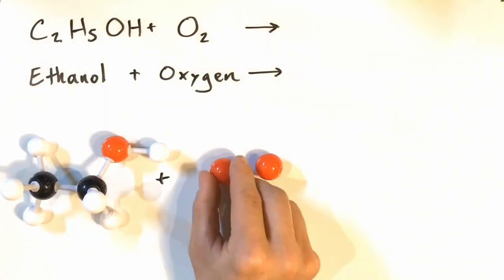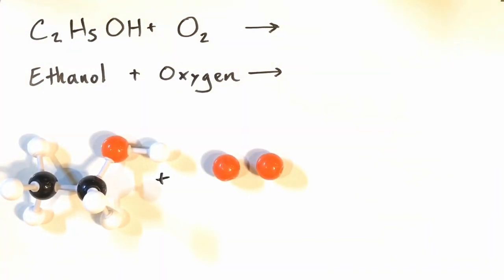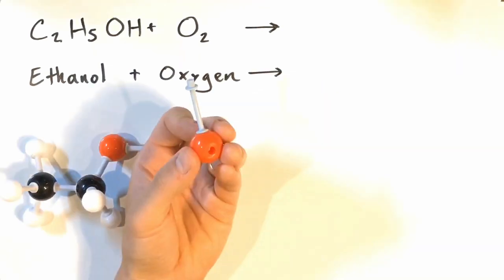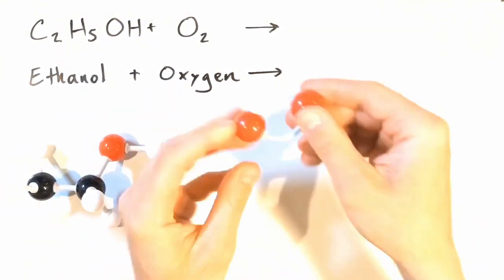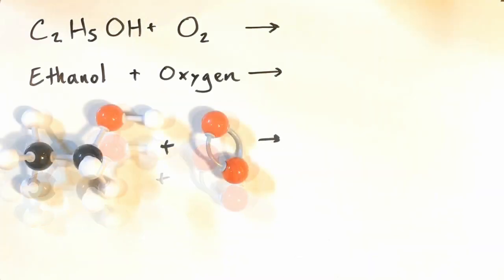A molecule of oxygen gas should be a little simpler because it's only two atoms, and each oxygen atom needs two bonds. The only way we can achieve that is with what's called a double bond, and we're doing that with these little bendy sticks. So there's our molecule of oxygen.